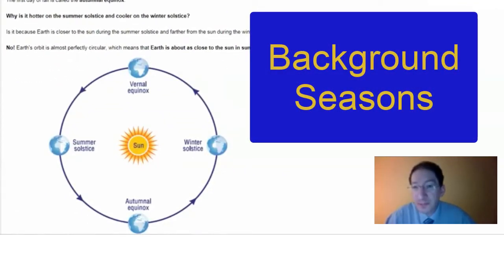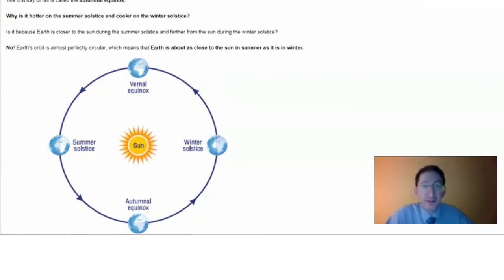First, some terminology. Summer and winter solstice refer to the first days of summer and winter, respectively. Vernal and autumnal equinox refer to the first days of spring and fall, respectively.